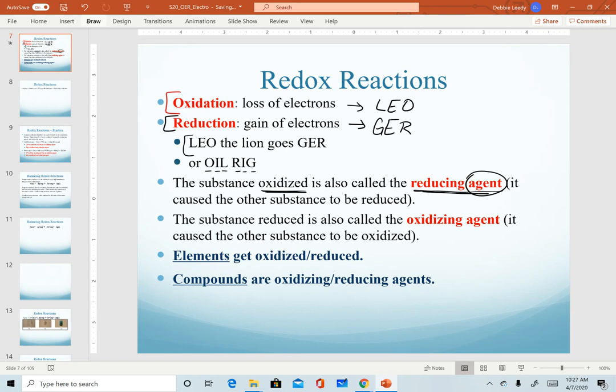When we're describing the oxidizing agent, this is the substance that causes something else to be oxidized. Therefore, it would be reduced. Two key things to pay attention to: Elements are substances that get oxidized and reduced. Compounds are the oxidizing and reducing agents.